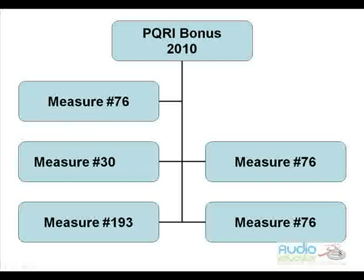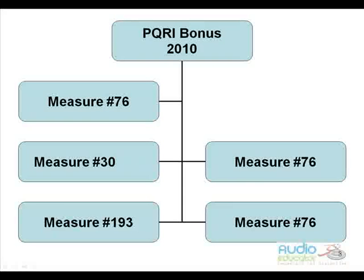This is what we're going to be talking about, this PQRI, and we'll move right on. You see the way I've got this set up — it's set up as a reason for a reason with Measure 76 on the top and then your two bars following that. I have some reference material on slide four from the ASA and the CMS.gov. There's also a website for the feedback reports, and you need some passcodes to get your feedback reports, but we'll talk about that later.